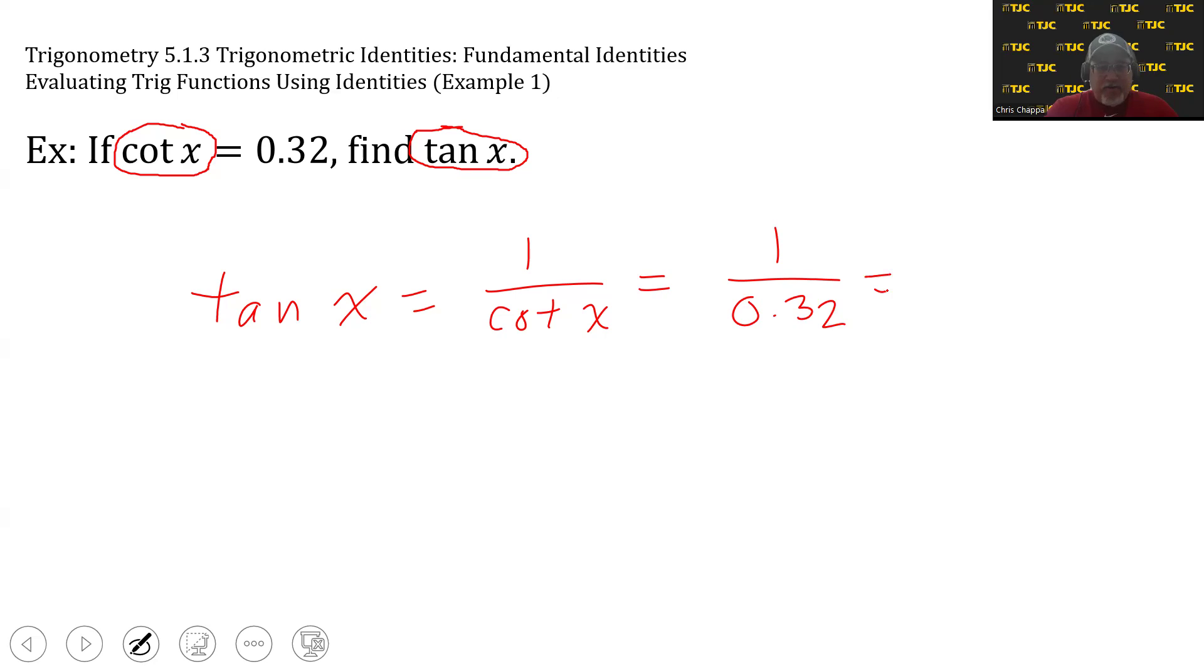Grab me a calculator. 1 divided by 0.32 is 3.125.